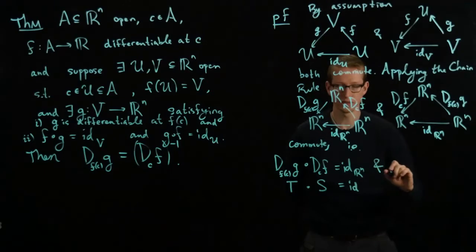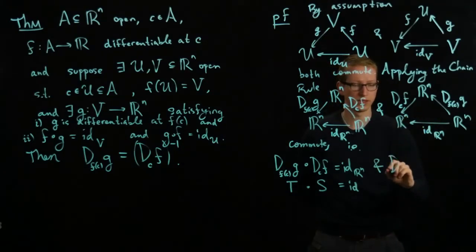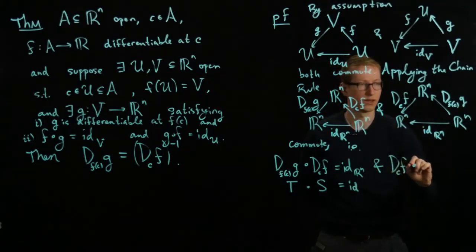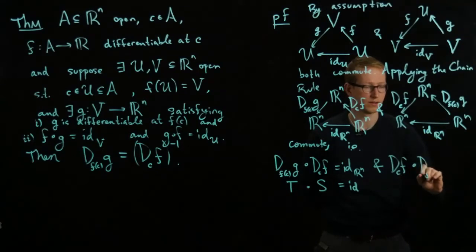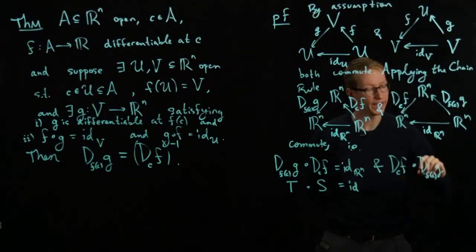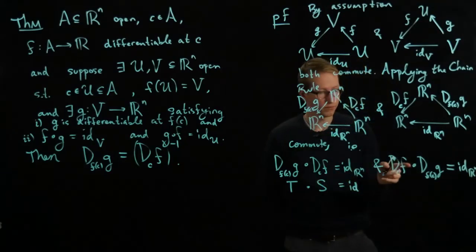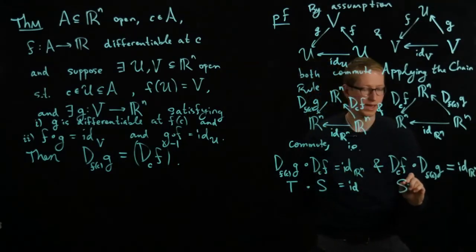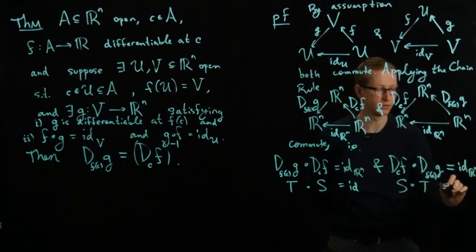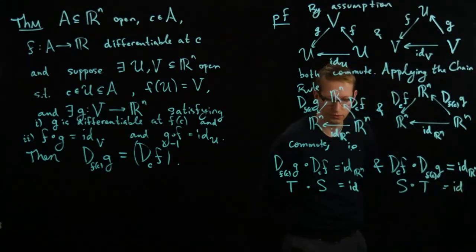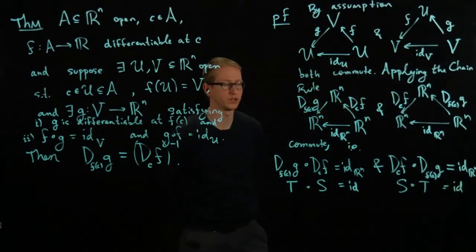And similarly this diagram commuting tells us that D, C, F composed with D, F, C, G, D of G at F, C rather, is equal to the identity in R^n, and this if we use the same notation T and S says S and T gives me the identity. Right, the identity linear transformation.